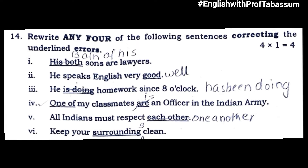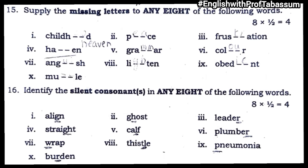'Keep your surrounding clean' — since there are many surroundings around you, correct answer is 'Keep your surroundings clean,' just add an S. Bit number fifteen: supply the missing letters to any eight of the following words. Childhood — double O. Peace — P-E-A. Frustration — T-R. Heaven — H-E-A-V-E-N. Grammar — double M. Colour — O-U. Anguish — U-I. Lighten — G-H. Obedient — I-E. Muscle — S-C.